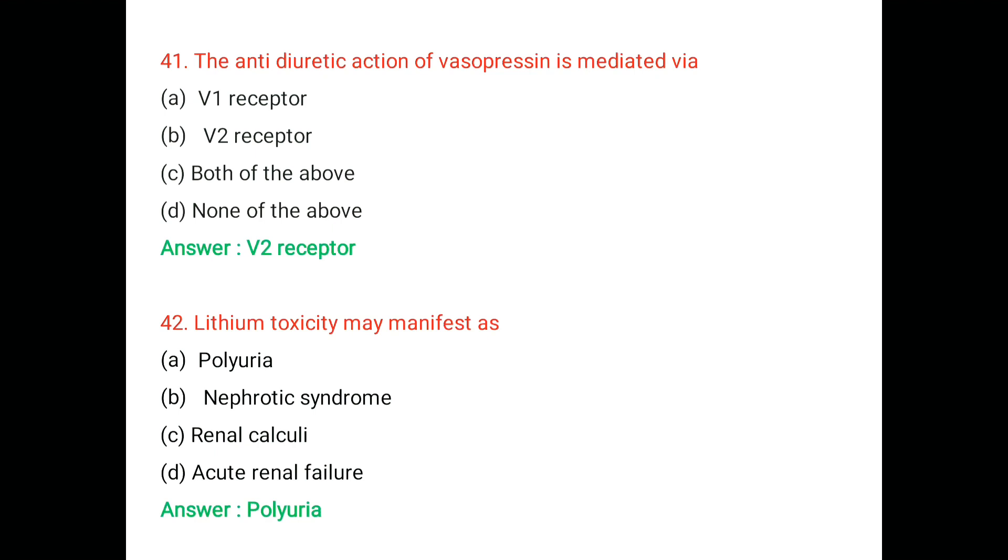Vasopressin also binds with V1 receptor, which are located on the blood vessels. That leads to vascular smooth muscle contraction and thereby it leads to increases the blood pressure.